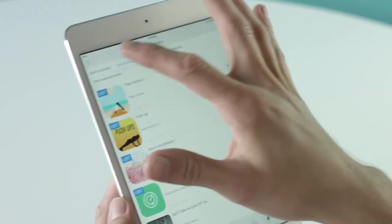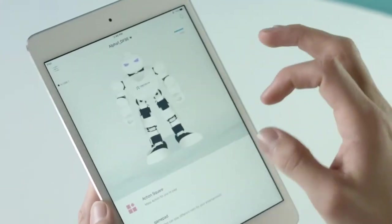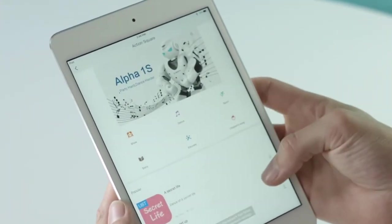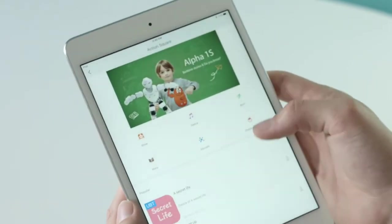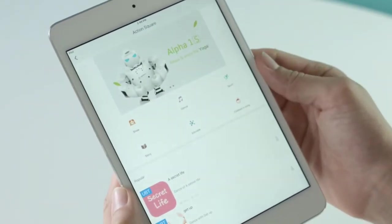If you want to download new actions, click on Action Square, where you can find the latest dances, sports, story, education, songs, or even user uploaded actions, which you can download for use with your Alpha.